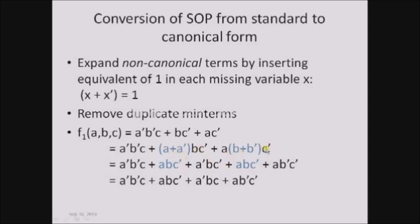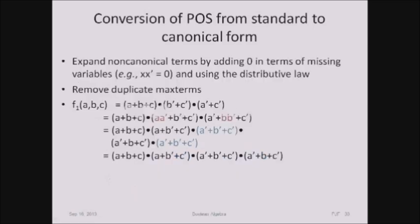Plus abc-complement plus ab-complement c-complement. Now the second step is to remove duplicate terms — if one term appears more than once, we have to remove it and consider it only once. Here abc-complement appears twice, therefore we consider it only once. So the result becomes: a-complement b-complement c plus abc-complement plus a-complement bc-complement plus ab-complement c-complement. This is the sum of products in canonical form.